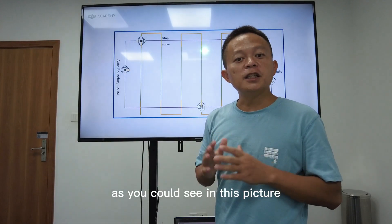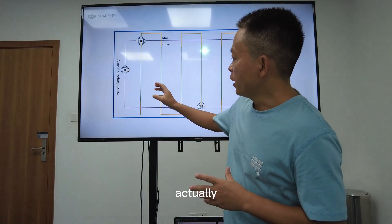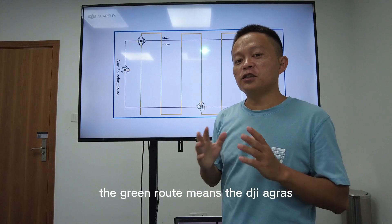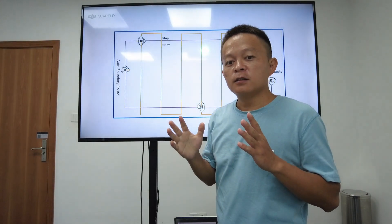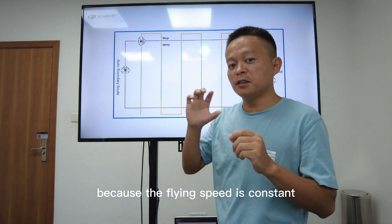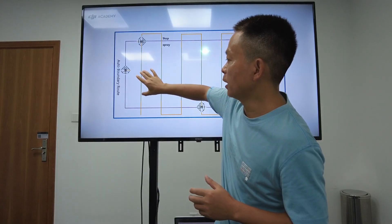As you could see in this picture, the green route means the DJI Agras sprays evenly because the flight speed is constant. The green route is constant.